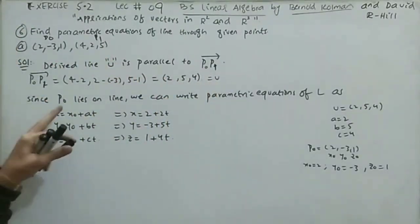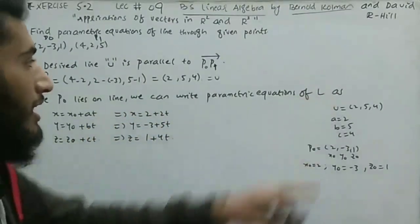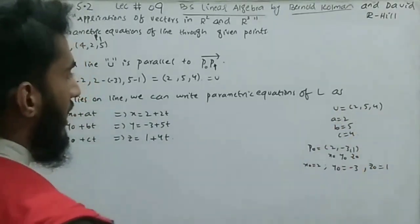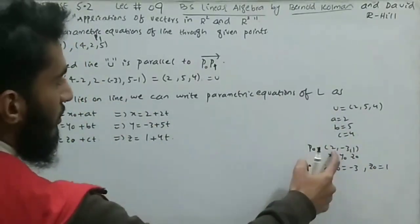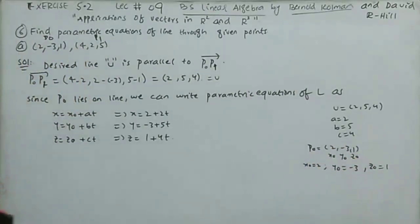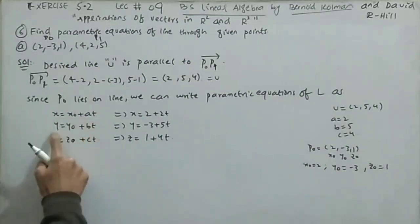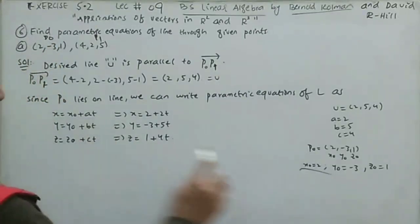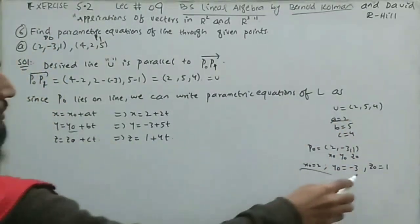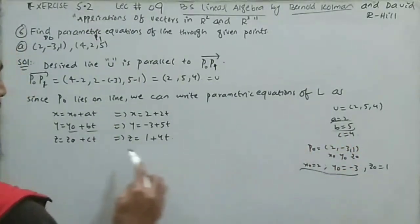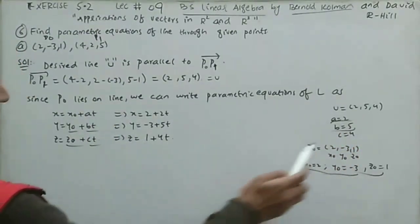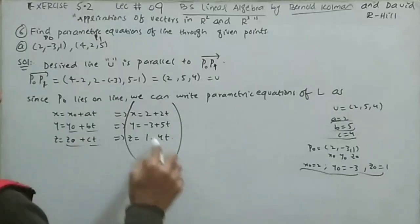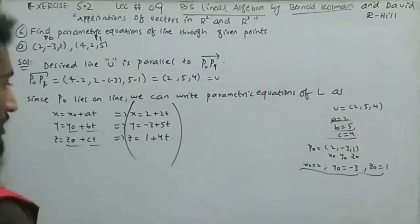With U = (a, b, c) = (2, 5, 4) and P0 = (x₀, y₀, z₀) = (2, −3, 1), the parametric equations are x = x₀ + at, y = y₀ + bt, z = z₀ + ct. Substituting gives the required parametric equations: x = 2 + 2t, y = −3 + 5t, and z = 1 + 4t.